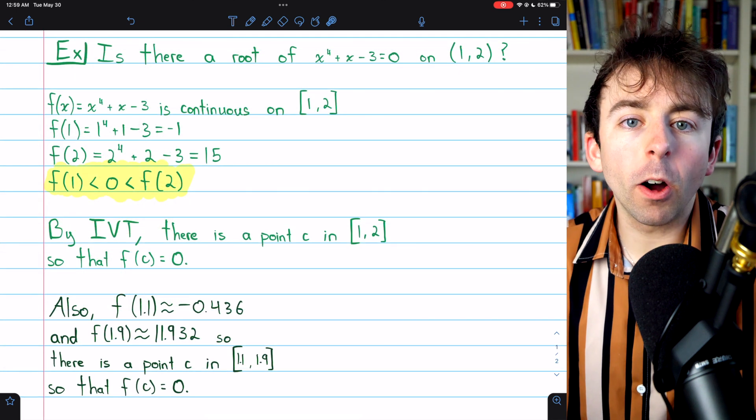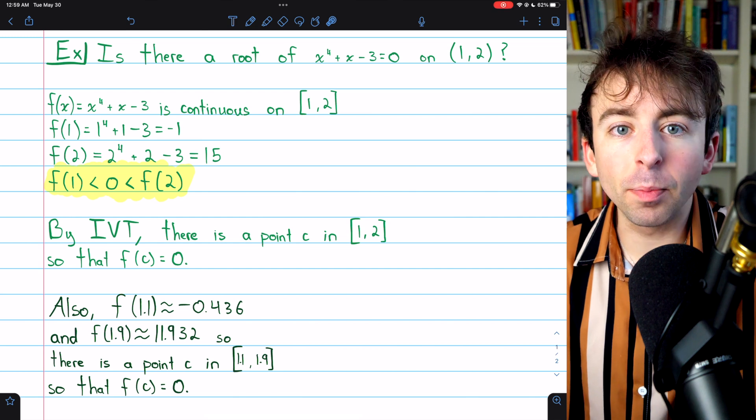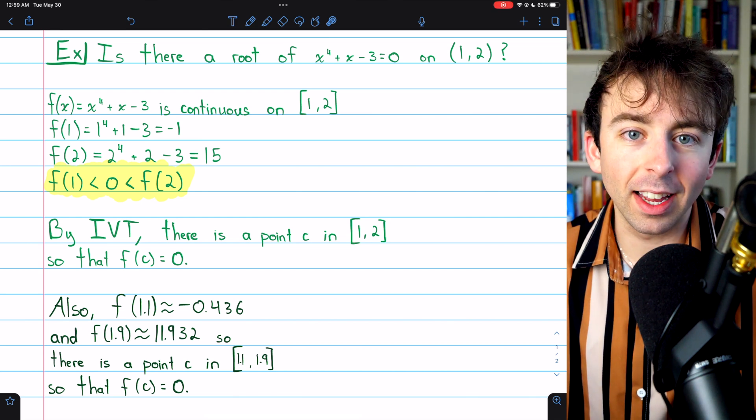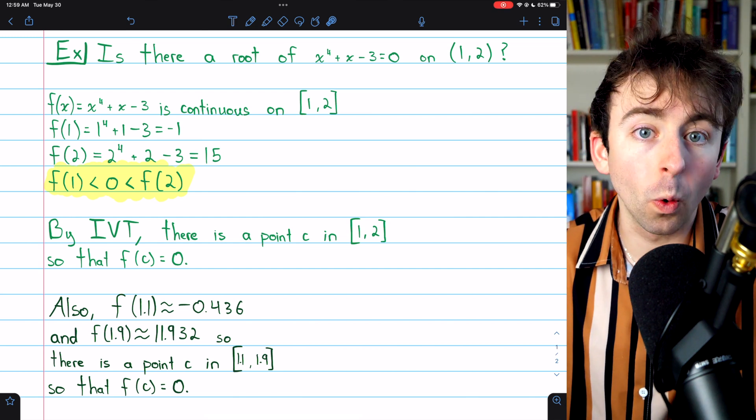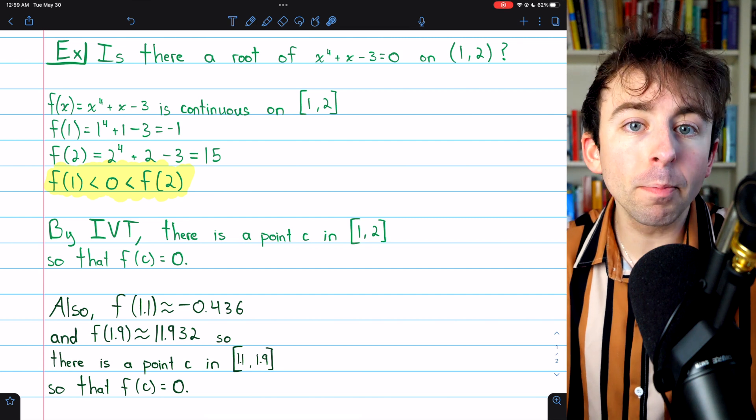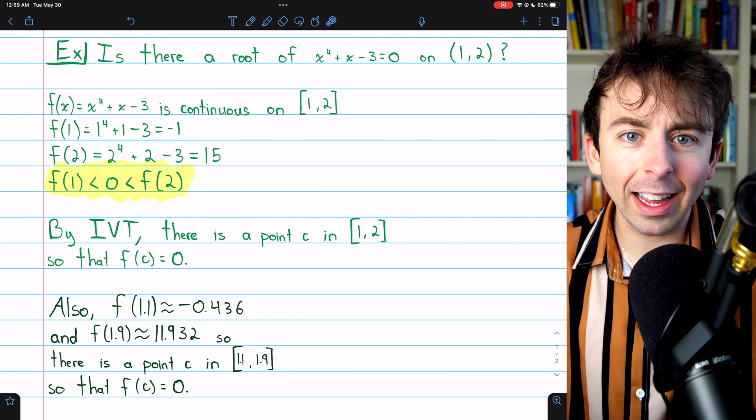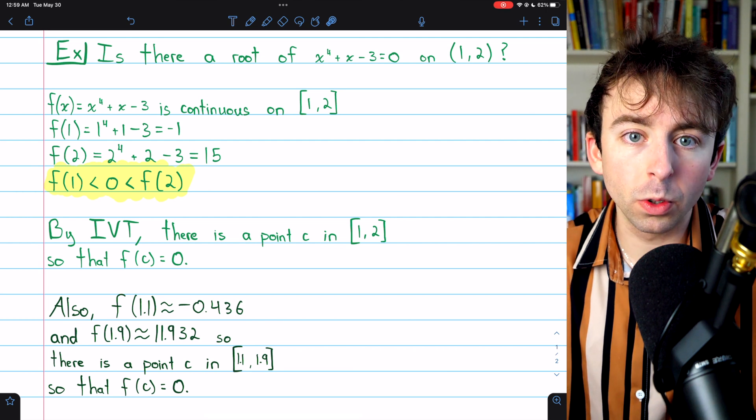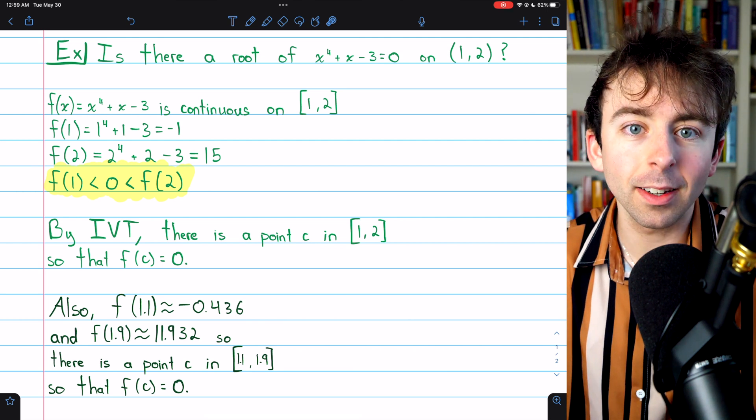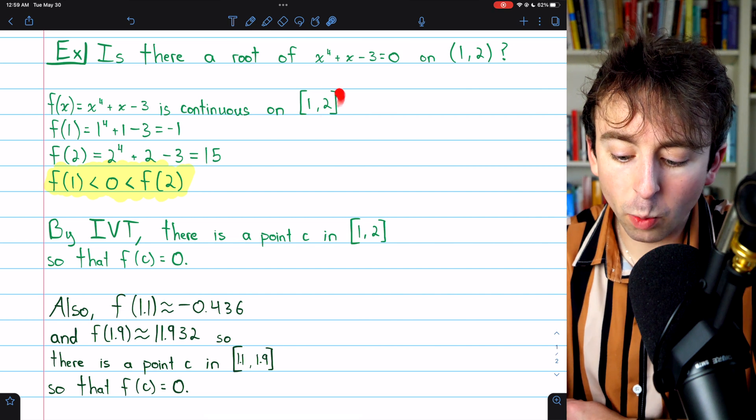The IVT is what we call an existence theorem. It simply guarantees that something exists. It doesn't tell us what it is or how to find it. However, by repeated uses of the intermediate value theorem, we can get a more accurate sense of where the root or solution might be located.